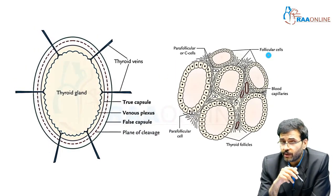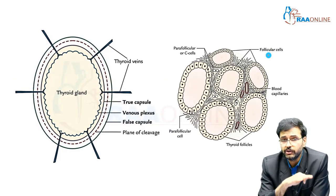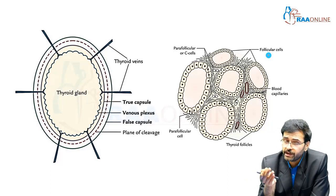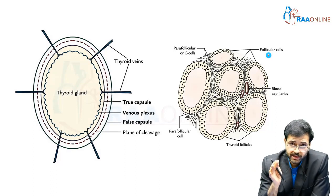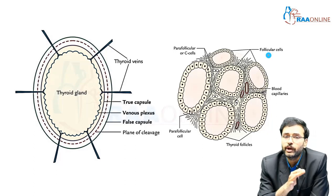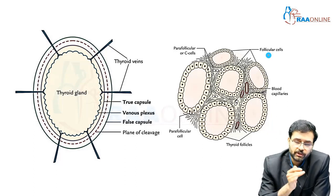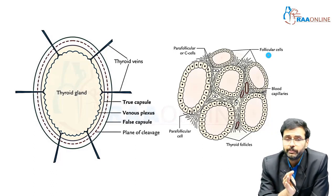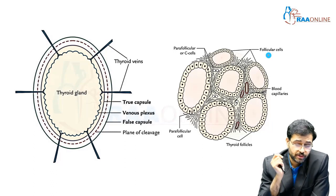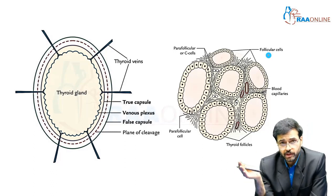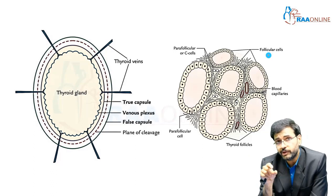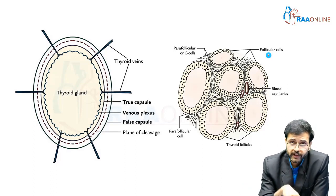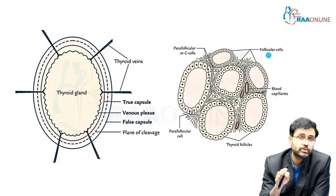This picture demonstrates what was mentioned earlier regarding how the thyroid gland has a true and a false capsule. It is important to know this because surgical dissection in thyroid surgery is always between the true and the false capsule — that is, you go deep to the pretracheal fascia but remain superficial to the connective tissue capsule. This is the avascular plane, which is different from the prostate. In a prostate, the venous plexus is located between the true and false capsule, so dissection should be outside the false capsule. Whereas in the thyroid, dissection is between the false capsule and the true capsule.